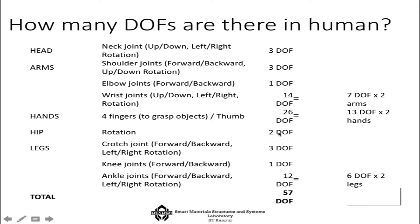The hip has two degrees of freedom, the crotch joint has three, the knee joint has one, and the ankle joint has six degrees of freedom each — so two ankles give 12 degrees of freedom. In total, the human body has about 57 degrees of freedom. Comparing our 57 degrees of freedom to ASIMO's 34 tells us how much still needs to be achieved in robotics.